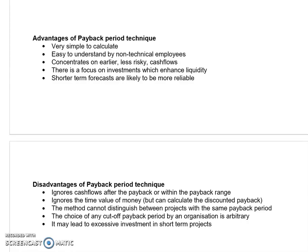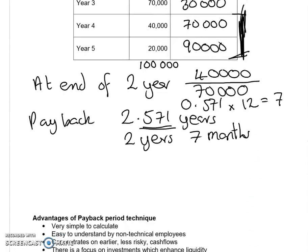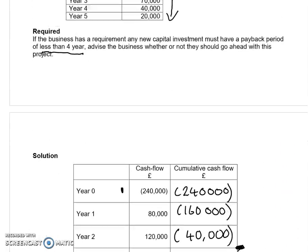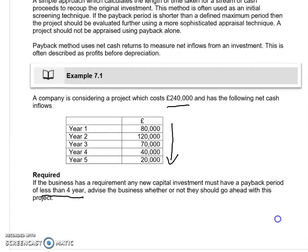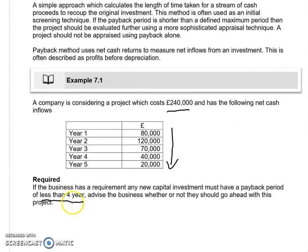You have to have a criteria. In this question, our criteria was that we have a payback period of less than four years. Well, we've got a payback period of two years and seven months, so our criteria is met and yes, our project would be accepted on those grounds.